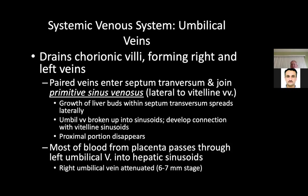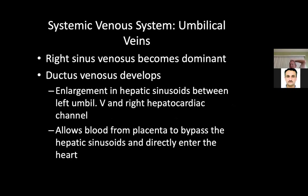Most of the blood from the placenta passes through the left umbilical vein into hepatic sinusoids. The right umbilical vein is attenuated at the 6 to 7 millimeter stage. The right side of the sinus venosus becomes dominant — our drainage comes mostly from the right side, not the left side, so the left side has to reabsorb. The ductus venosus develops by enlargement of the hepatic sinusoids between the left umbilical vein and the right hepatic cardiac channel, allowing blood from the placenta to bypass the hepatic sinusoids and directly enter the heart.